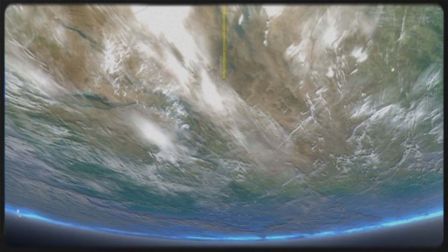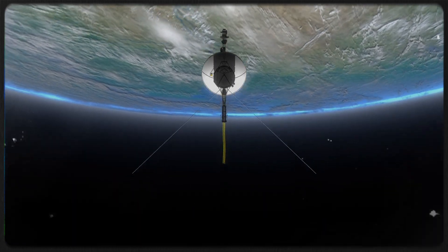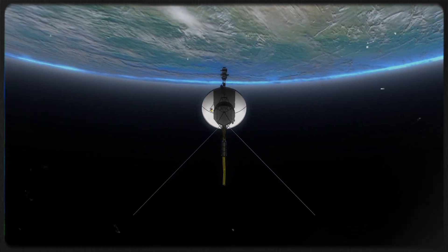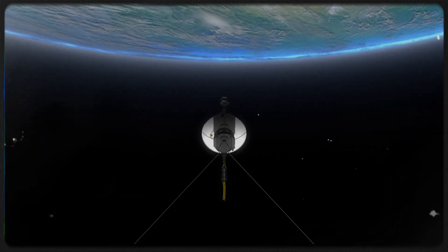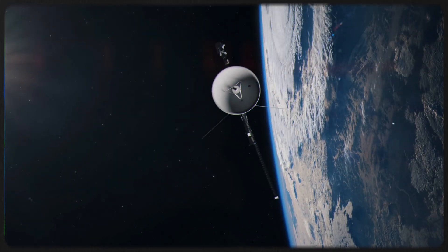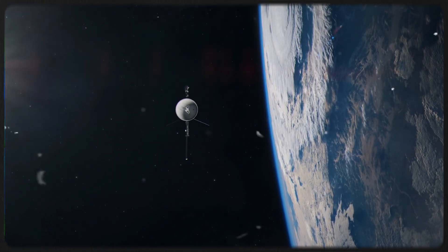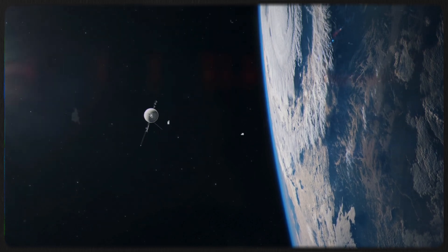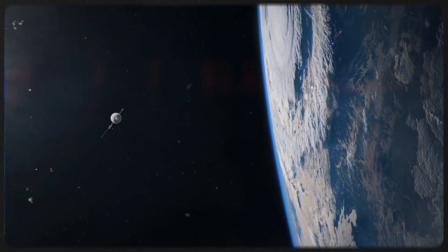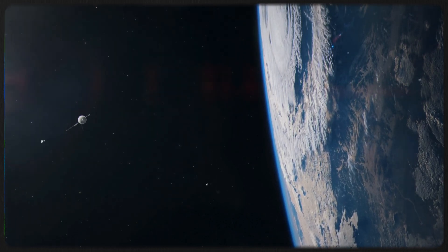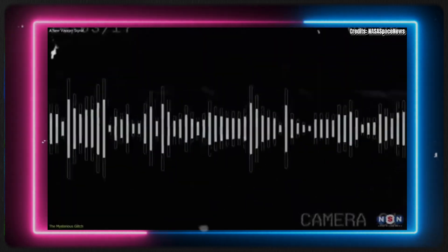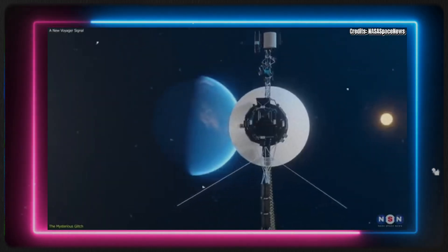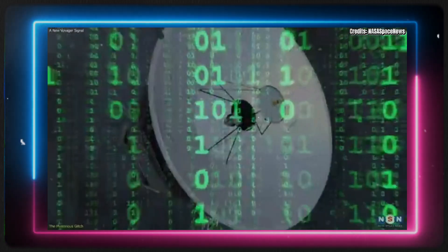One key reason for ending the Voyager missions is the vast distance the spacecraft have traveled from Earth. Currently, it takes about 22 hours for a radio signal to reach Earth from Voyager 1 and 18 hours from Voyager 2. This delay increases by three to four light seconds each day, making communication increasingly challenging as the probes move farther apart. The faint signals received from the spacecraft are also becoming more difficult to decipher due to interference from Earth's noise and scattered signals, compounded by recent glitches in their systems.